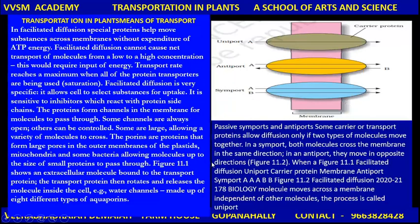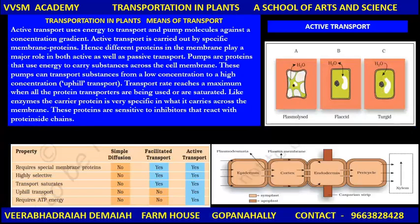Co-transport: passive transport and antiports. Some carrier or transport proteins allow diffusion only if two types of molecules move together. This is transportation in plants. Active transport uses energy to transport and pump molecules against a concentration gradient. Active transport is carried out by specific membrane proteins, and different proteins in the membrane play a major role in both active as well as passive transport. Transportation consists of active transport and passive transport.